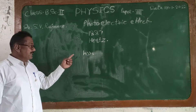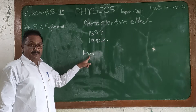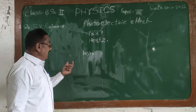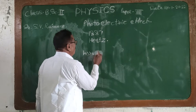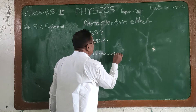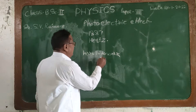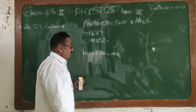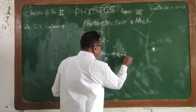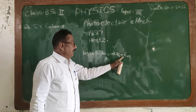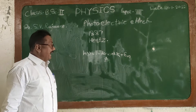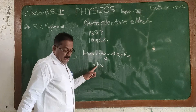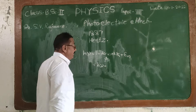In Einstein's study, the light incident on the metal surface has energy hν, where ν is the frequency of incident radiation and h is Planck's constant. This energy acquired by the electrons from the incident light is utilized to do work, denoted as φ. The remaining part of that energy comes out of the metal surface in the form of kinetic energy.